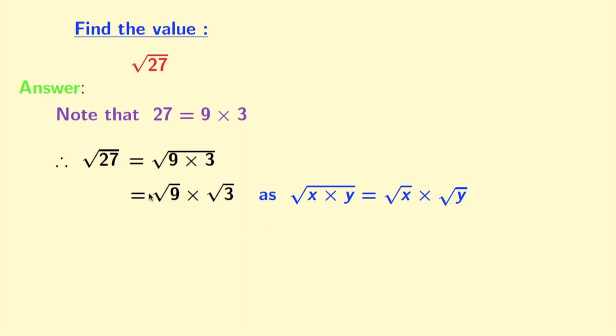Now as we know that square root of 9 is equal to 3, so we will write it as 3 times root 3. That means 3 root 3. And this is the answer.